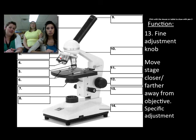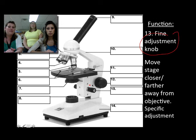Next we have the fine adjustment knob. It's the lower and smaller adjustment knob on your microscope. It moves the stage closer and farther from the objective, but with specific adjustment. You have to be very careful when using the coarse adjustment at higher magnifications. You must use the fine adjustment knob or you will break a slide.